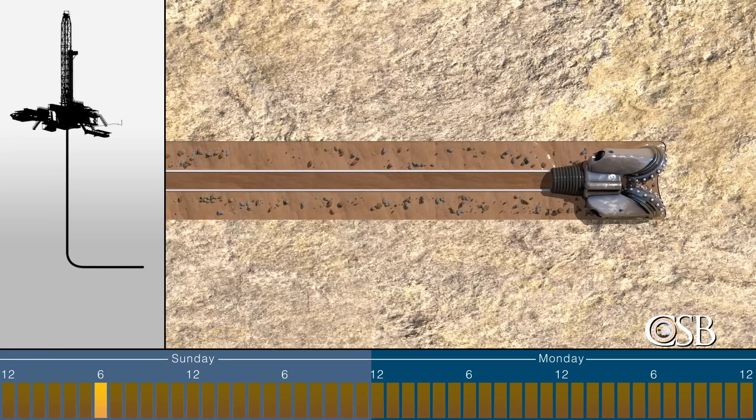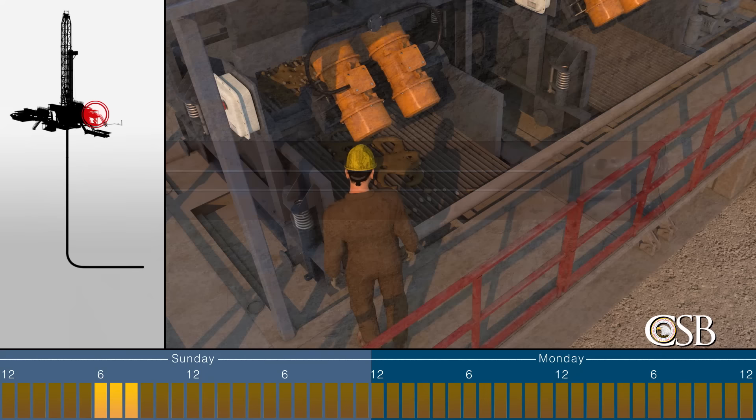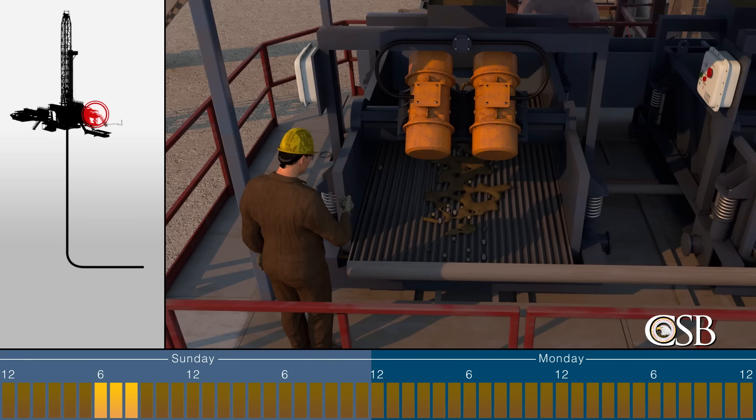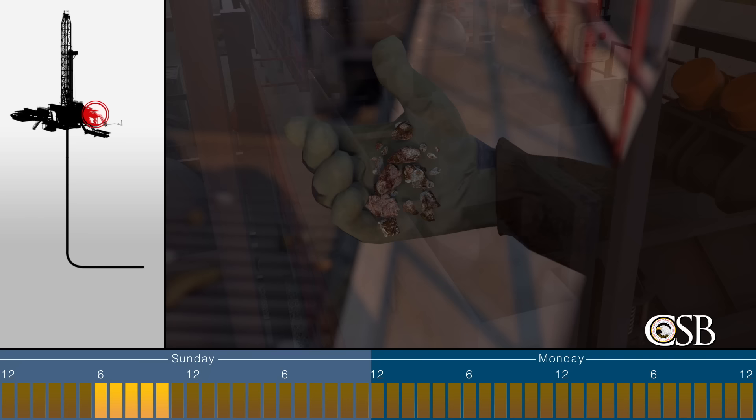On January 21, 2018, Patterson crew members had been drilling the well for 10 days under the supervision of two contracted representatives from Red Mountain. They were drilling the horizontal section of the well. That morning, a crew member called a mudlogger studied the rocks returning to the surface and found they were different than expected. He believed the drill pipe had inadvertently entered a different geological formation where Red Mountain did not intend to drill.